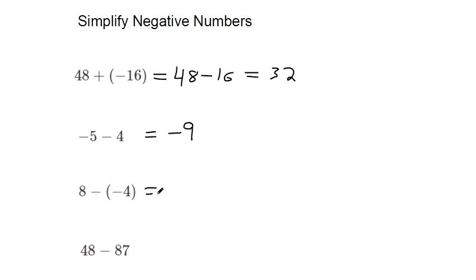So negative 5, here's another way of looking at that too. Here is roughly where negative 5 would be. If you subtract 4, subtracting moves you 4 places to the left. So this is negative 6, negative 7, negative 8, negative 9 is where we end up. When you add numbers, you go to the right on the number line. When you subtract numbers, you go to the left on the number line.